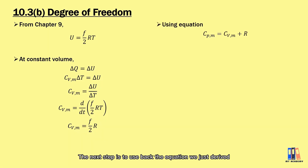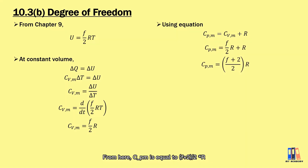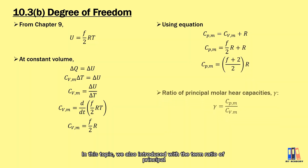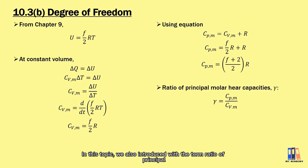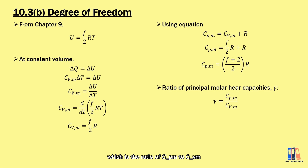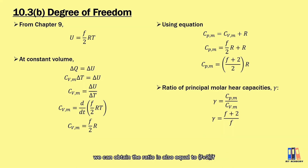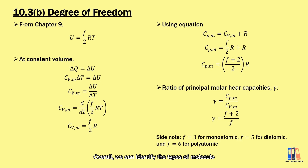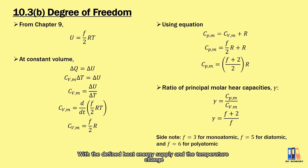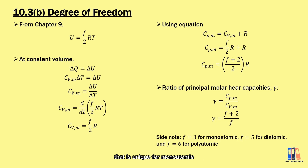Using the equation C_PM = C_VM + R, we get C_PM = (F+2)/2 × R. We are also introduced to the ratio of principal molar heat capacity, gamma, which is the ratio of C_PM to C_VM. Substituting the two equations, the ratio also equals (F+2)/F. Overall, we can identify the types of molecules based on this — monoatomic, diatomic, and polyatomic molecules each have a unique degree of freedom and corresponding molar heat capacity values.